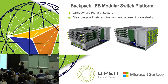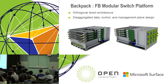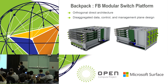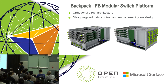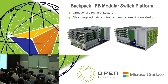Here's the chassis cross-sectional view. It is an orthogonal design. You can see four line cards in the front plugging into the chassis horizontally, and four fabric cards on the rear side plugging in vertically — they are orthogonal inside the chassis. The key is we disaggregated data plane, control plane, and management plane.